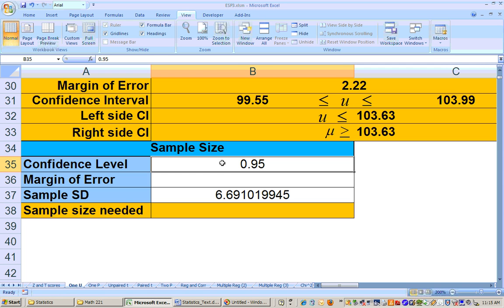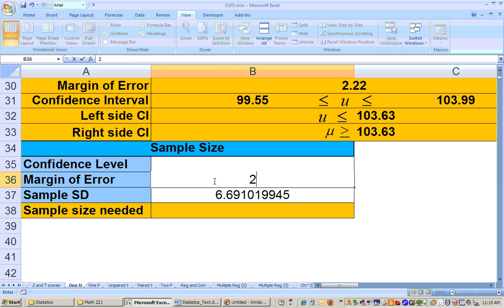So you put in your confidence level right there, which in this problem is 95%. Put in your margin of error that you are supposed to get it down to, which it says 2 for this problem.